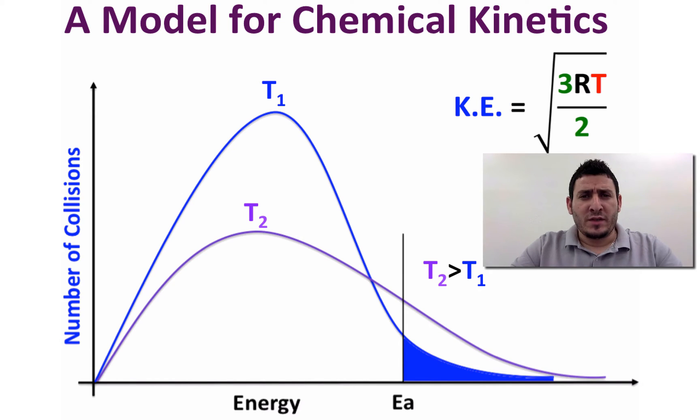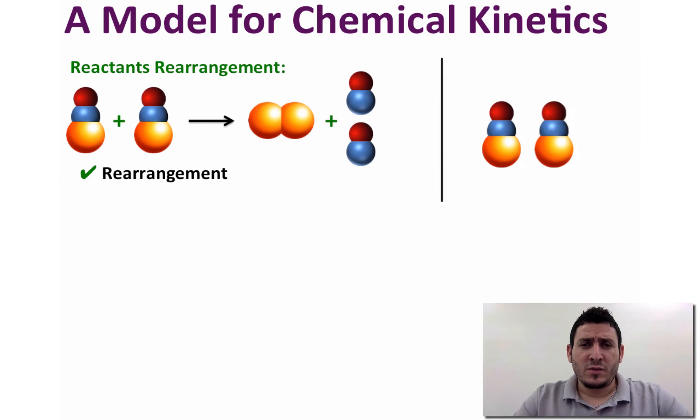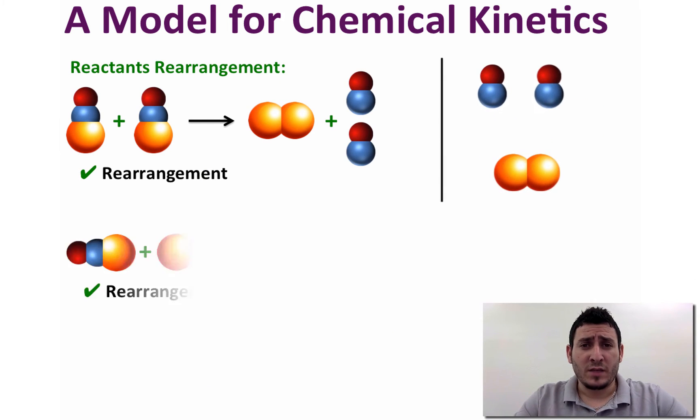As temperature increases, the fraction of collisions with enough energy will increase dramatically. Another complication arises since the experiment has shown that the rate of the reaction is smaller than the rate of collision and this is due to molecular orientation. Some collisions with the correct orientation can lead to a reaction and some cannot.